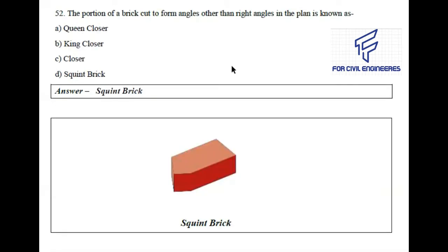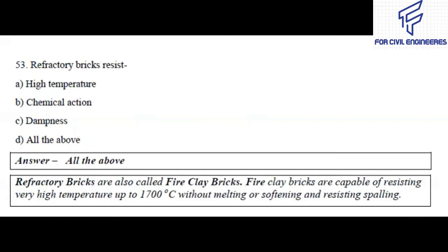Question number 52: The portion of a brick cut to form angles other than right angles in the plan is known as — queen closure, king closure, closure, or squint brick? The right answer is squint brick. A pictorial example of squint brick is given below.